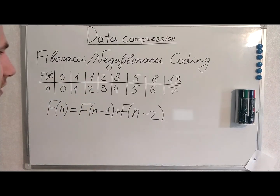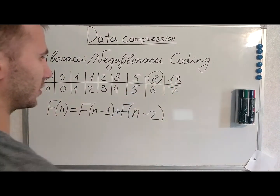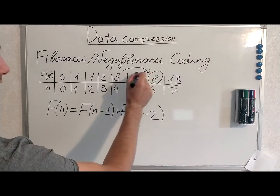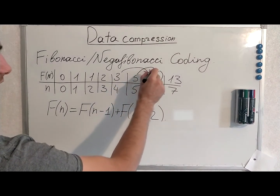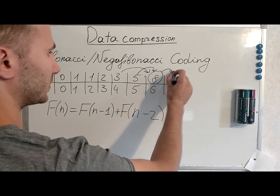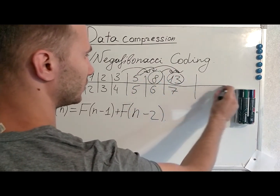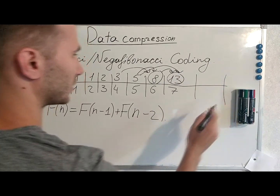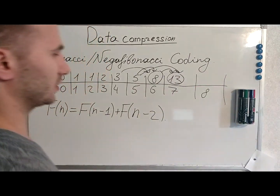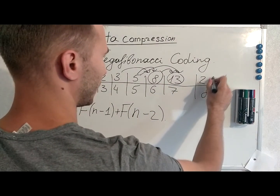This actually means that each element of the Fibonacci sequence is the sum of the two previous elements. Consequently, this element is the sum of the two before it. You can continue this sequence. Try to think yourself what the eighth number of the Fibonacci sequence will be — it will actually be 21.